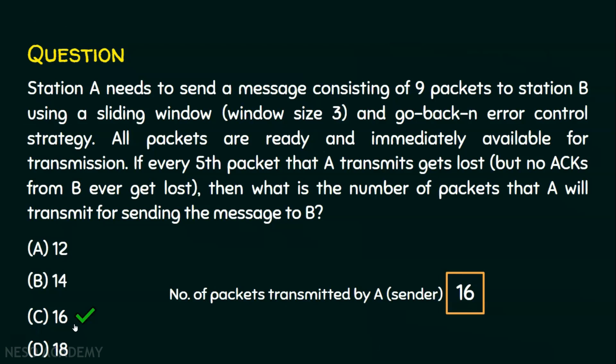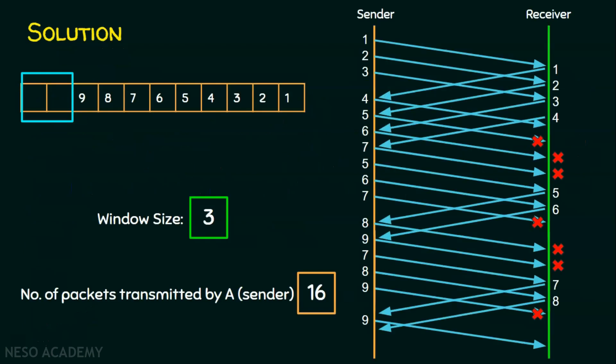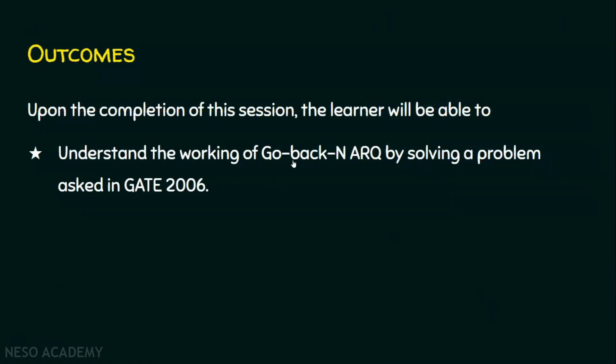I hope you now understand how to solve this problem. Try it manually — take a paper and pen and solve the entire problem as I did. You will get a clear understanding only when you solve it yourself. There is also a shortcut for solving this problem, but in this lecture I have explained the formal method. In the next lecture, we will see how to solve this using shortcuts. Thank you for watching.